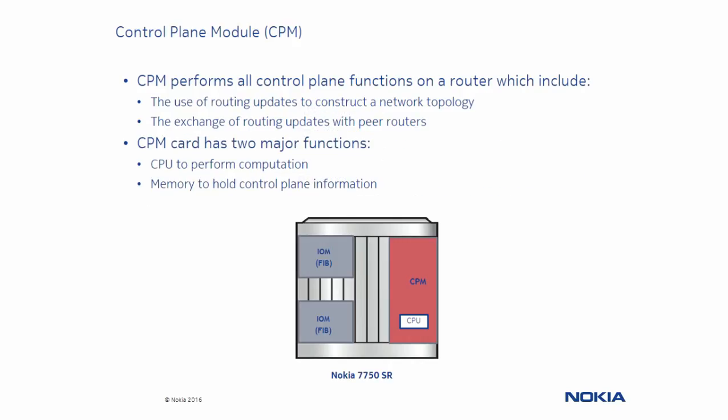Let's talk about the Control Plane Module, or CPM. It is considered the brains of the Nokia 7750 service router and is used to exchange routes to construct a network topology, which is referred to as the Forwarding Information Base or FIB. The CPM downloads the FIB to each input-output module, which is then used to perform data forwarding.